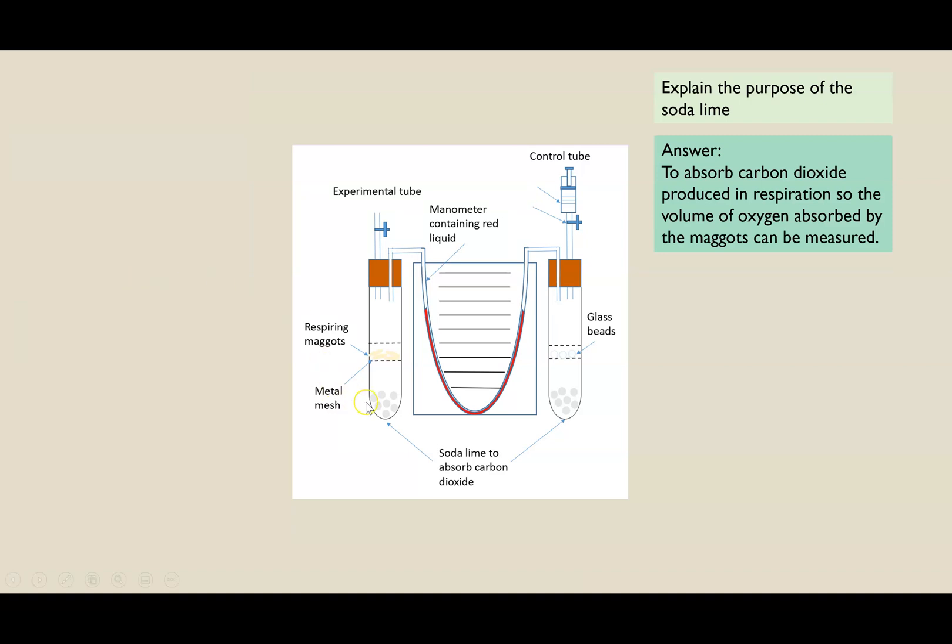The purpose of the soda lime is to absorb the carbon dioxide produced. And that's because the volume of oxygen that will be absorbed by the maggots will be equal to the volume of carbon dioxide produced in respiration. So if that carbon dioxide was not absorbed, the volume would always remain constant, the pressure would remain constant, and that liquid would not move. And therefore, we'd have no way to measure the rate. So it absorbs the carbon dioxide so we are able to actually measure the volume of oxygen absorbed by the maggots. And we use the volume of oxygen absorbed to represent the rate of respiration.